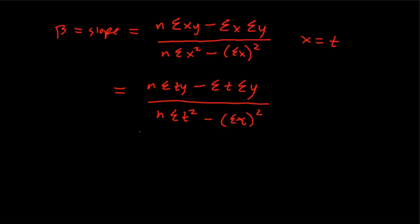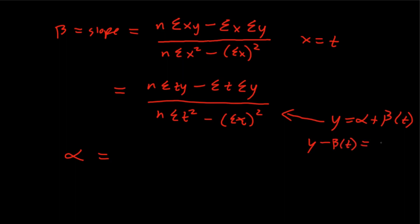After we calculate the slope, we're going to calculate alpha. In linear regression you have y equals alpha plus beta times t. To calculate alpha, we just rearrange: it's y-bar minus beta times t-bar, meaning the average of y minus beta times the average of t.